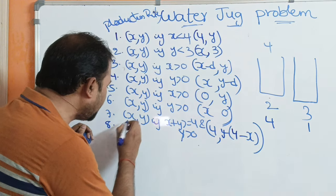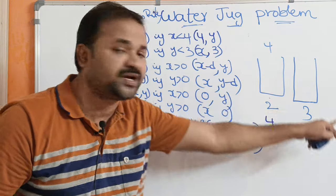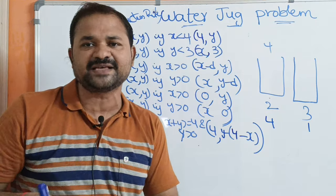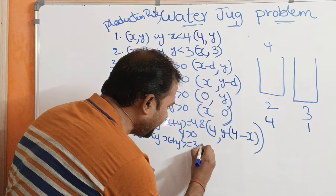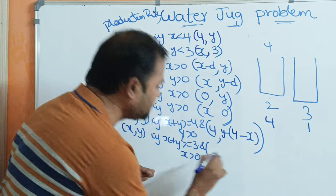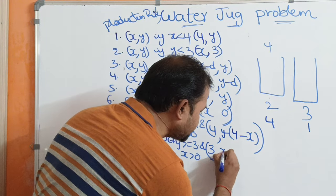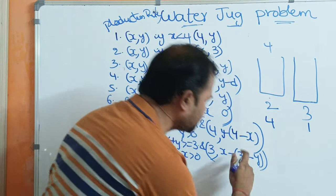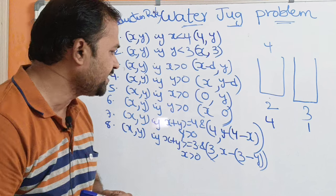The eighth rule is similar: pour water from the 4-liter jug into the 3-liter jug until the 3-liter jug is full. The conditions are x plus y is greater than or equal to 3, and x is greater than 0. We replace 4 with 3 since the 3-liter jug has capacity 3. The new state is (x minus (3 minus y), 3).